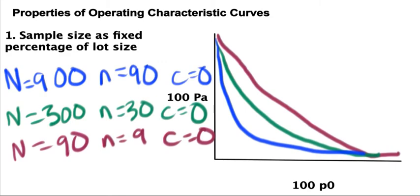As you can see, the general trend is that the larger our lot size is, which will in turn mean a larger sample size, the steeper our OC curve will be.